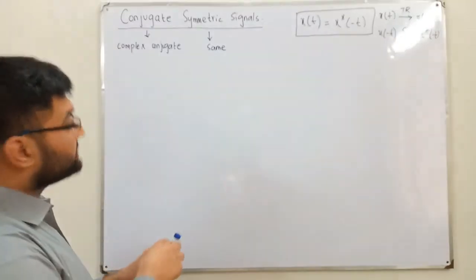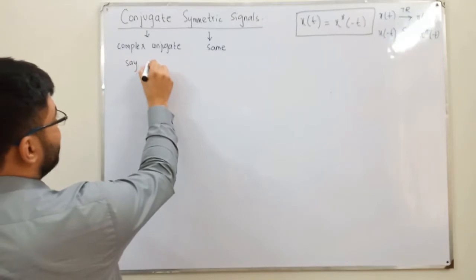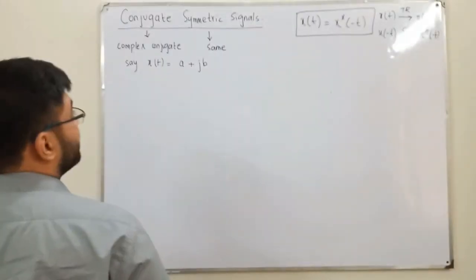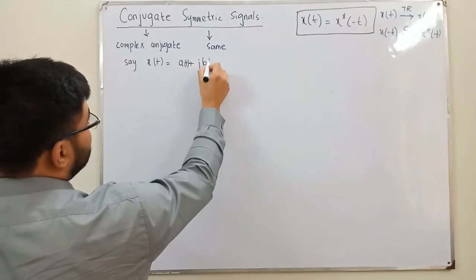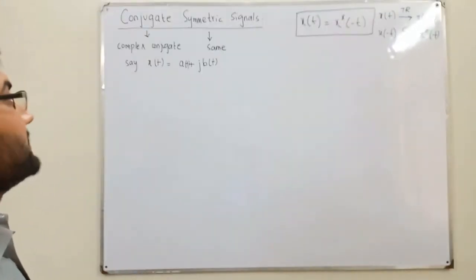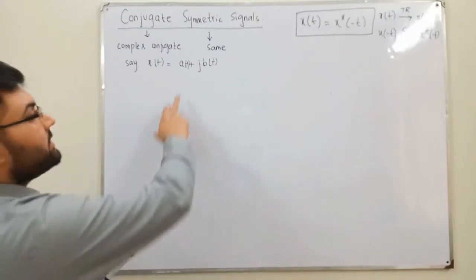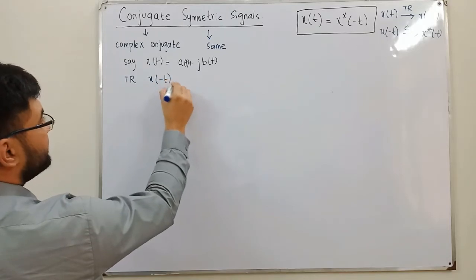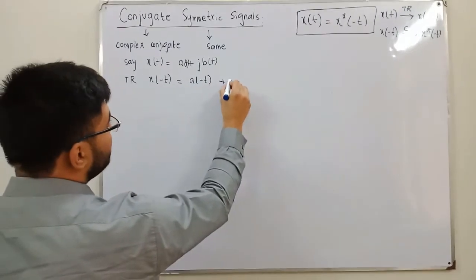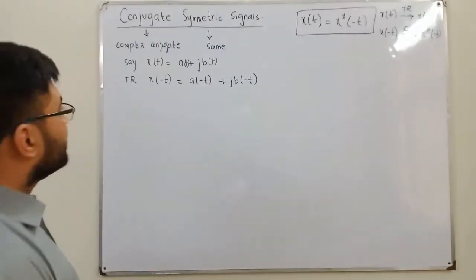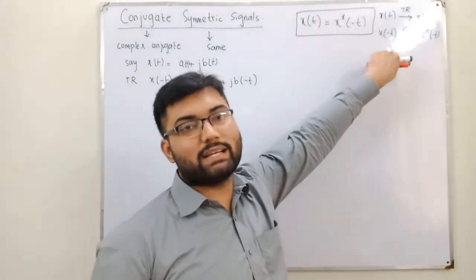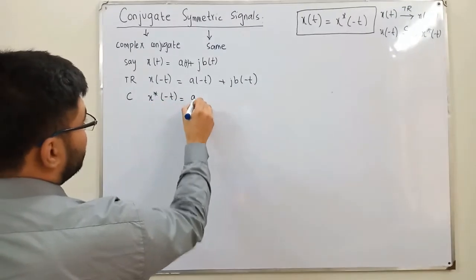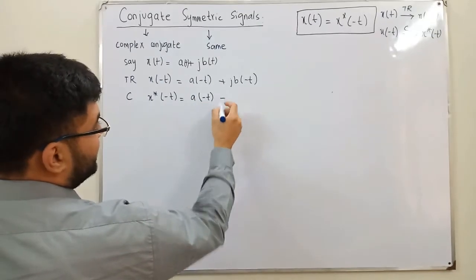Let's derive this generally. Say x(t) = a(t) + j·b(t), where a(t) is the real part and b(t) is the imaginary part. Time-reversing gives x(−t) = a(−t) + j·b(−t). Taking the complex conjugate gives x*(−t) = a(−t) − j·b(−t).